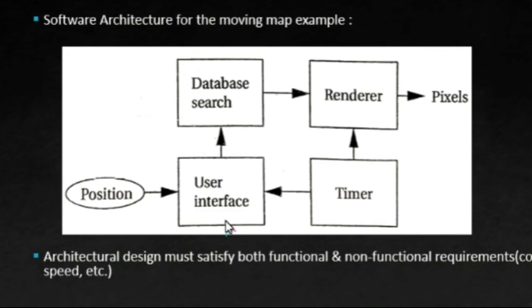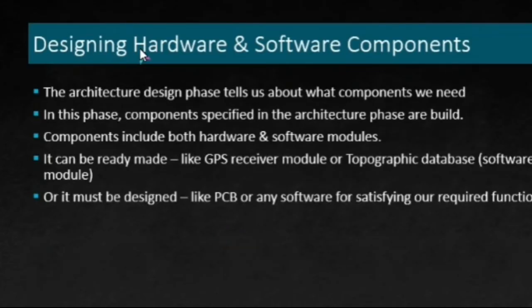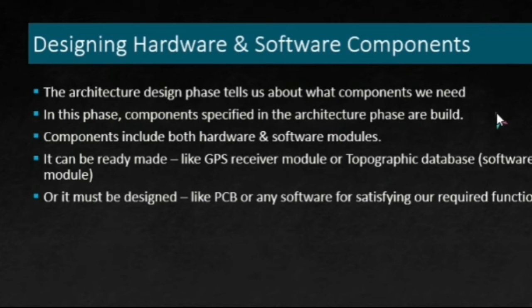Now let's move on to the next phase: Designing Hardware and Software Components. This is the second-to-last phase in the embedded system design process. In this phase, the components specified in the architecture phase are built. The architecture design phase tells us what components we need, and based on that, we build the components required for our system.